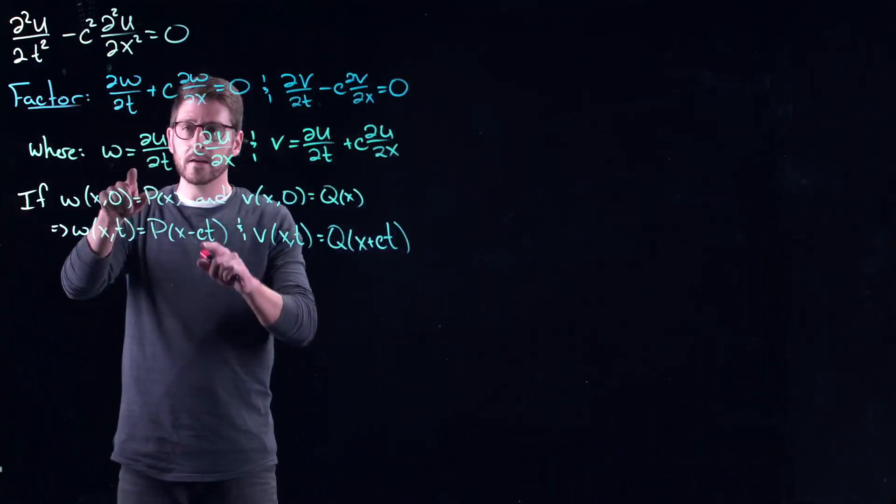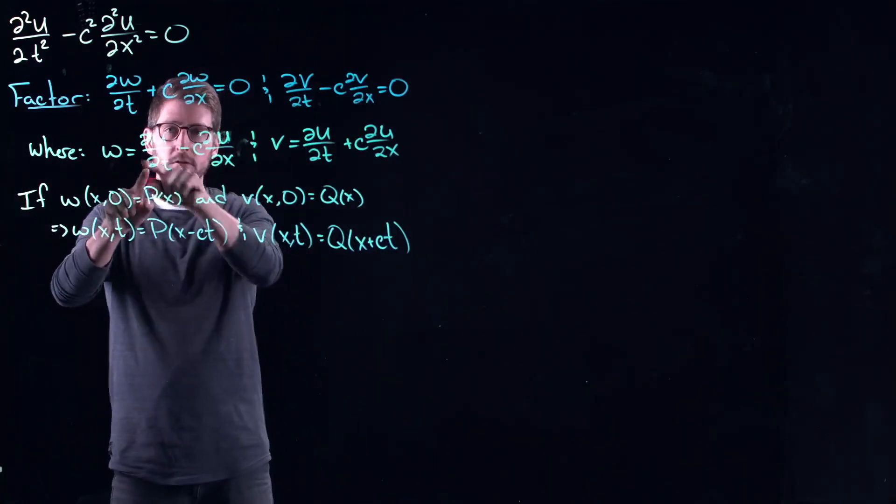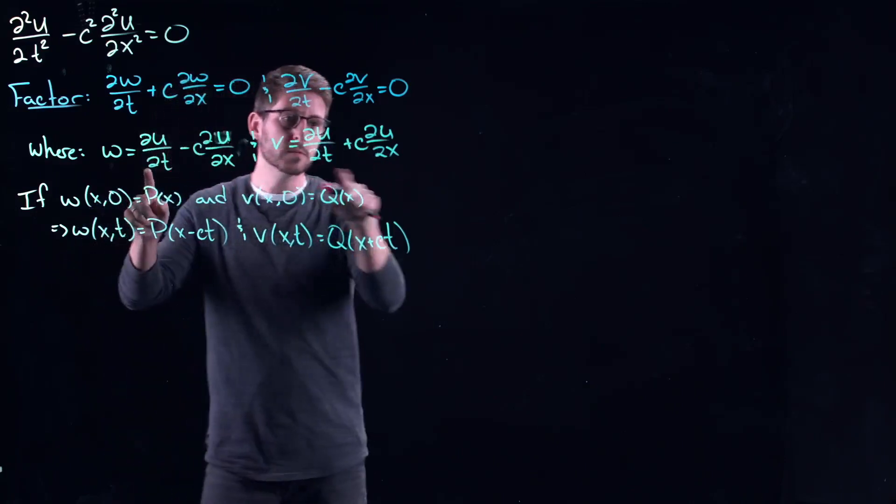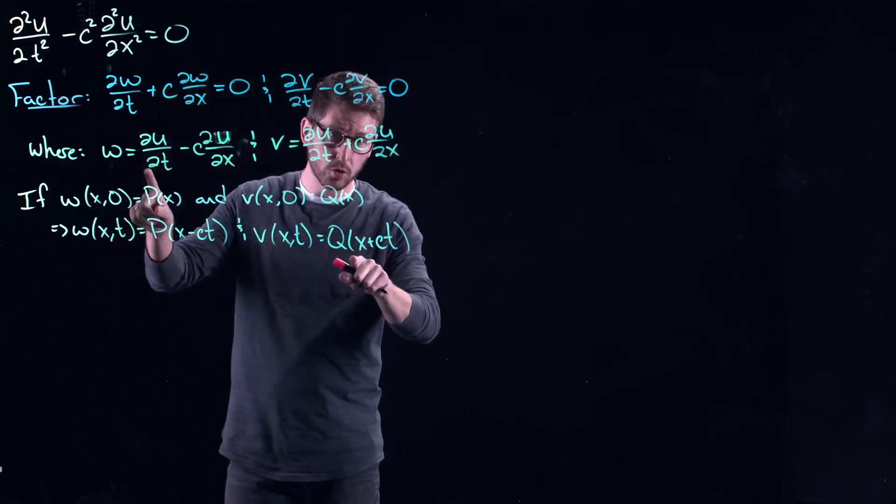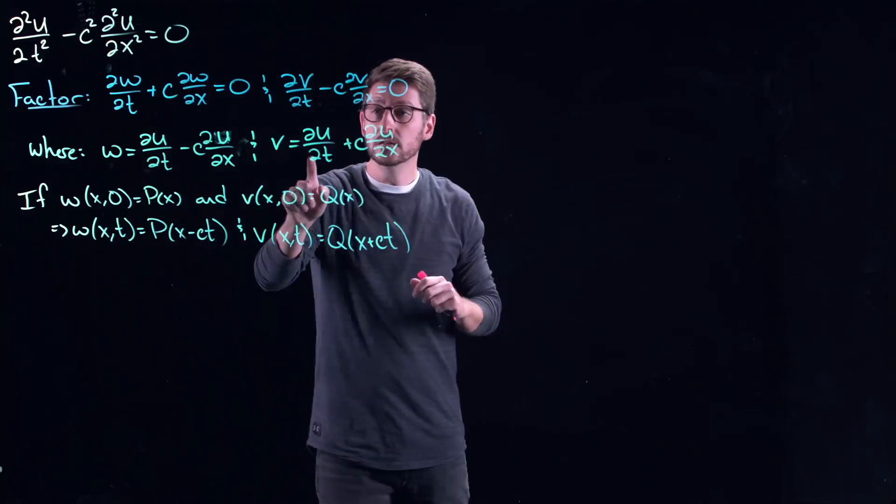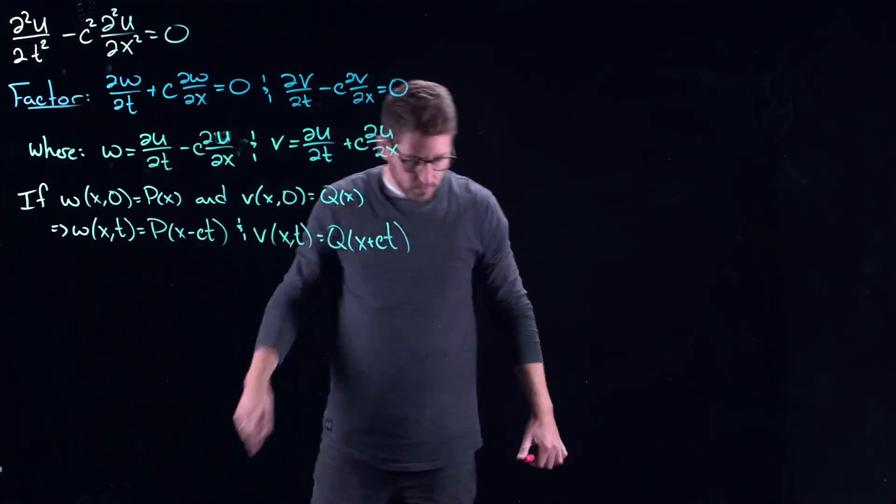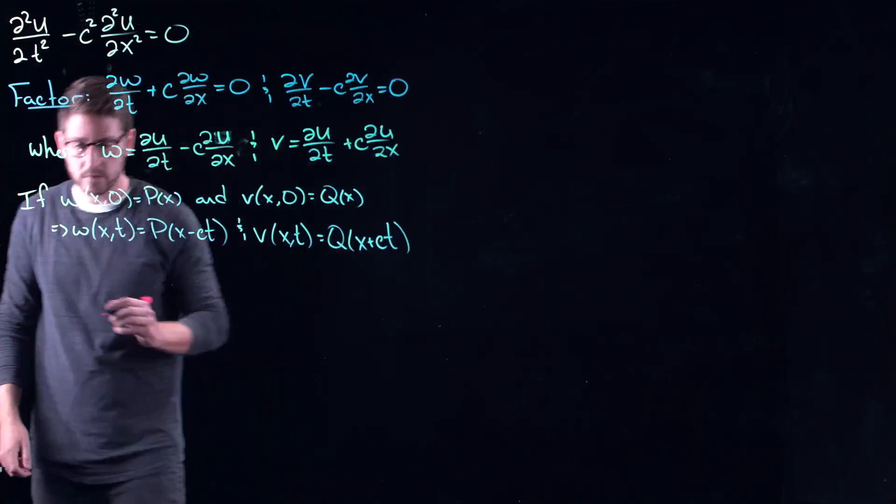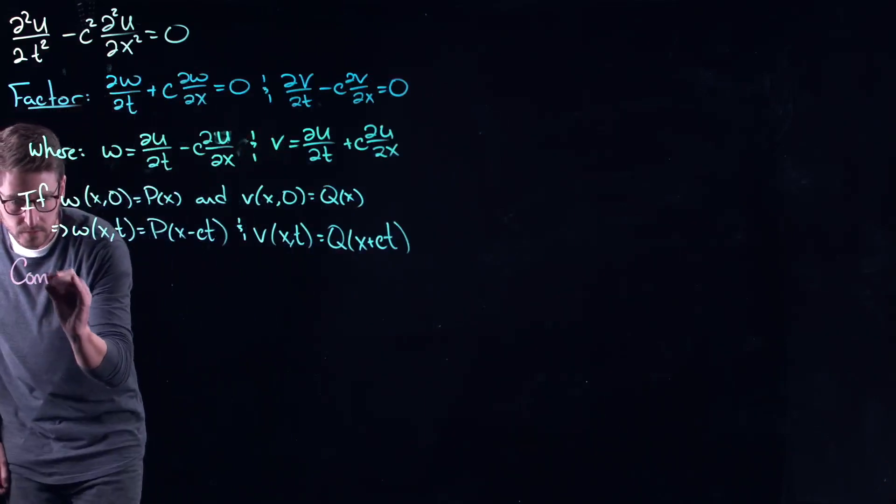Okay. So that means that this partial differential equation right here is equal to p. This partial differential equation is equal to q. Now what I can do is I can try and isolate the partial derivatives of u with respect to x.